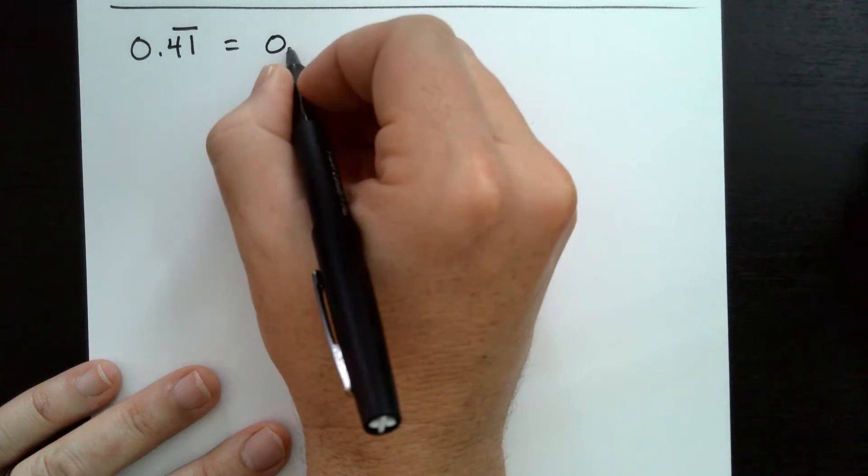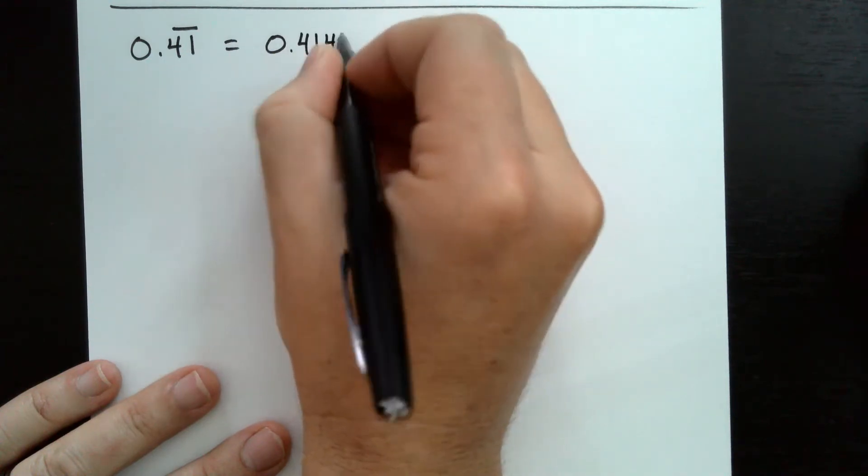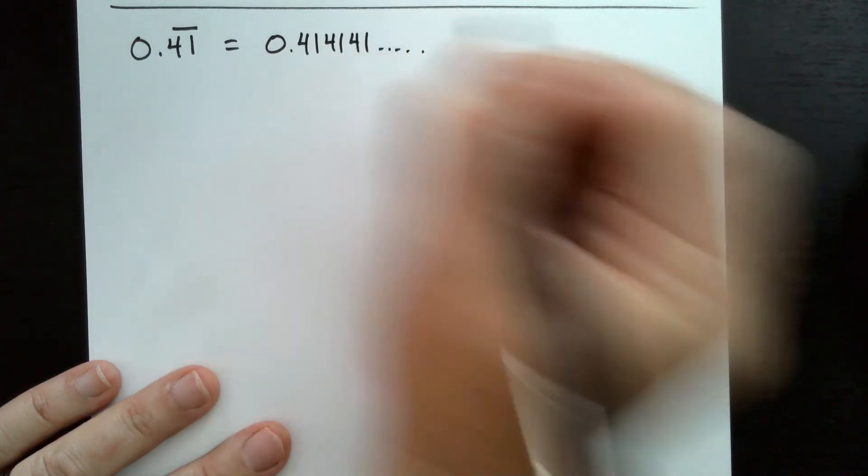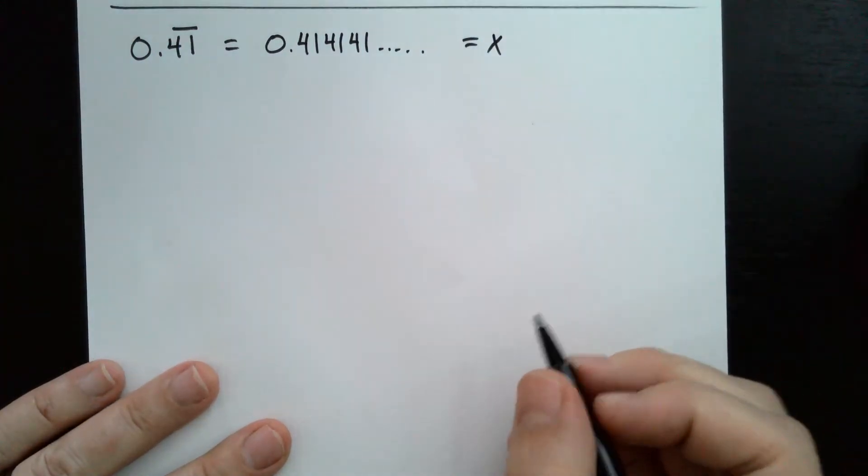So it could be written as 0.414141 repeating. Again, we're going to set that equal to x, and we're going to multiply.